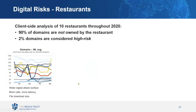We did an analysis of 10 restaurants throughout 2020. We found that 90% of domains are not owned by the restaurants, and 2% of the domains we saw are considered high risk. Looking at specific sites, there are 98 domains on average — and the greater the number of domains, the greater the risk, because of the variety of things those domains can bring: more calls, more latency, greater file download size, and others.